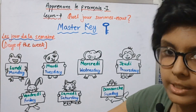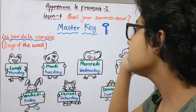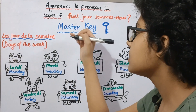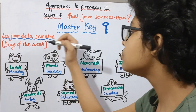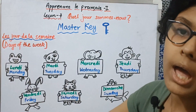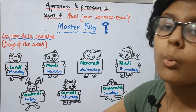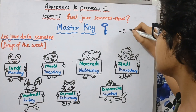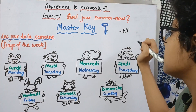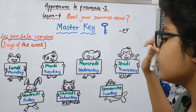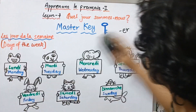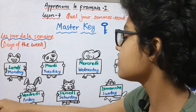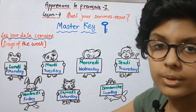Now the two most important topics of Lesson number 7 are: first, the days of the week — les jours de la semaine — and second, the verb 'aller,' which is the only irregular verb ending in the ER group. Aller is the only ER-ending verb that is irregular. Today we will first cover the seven days of the week and then do the verb aller.